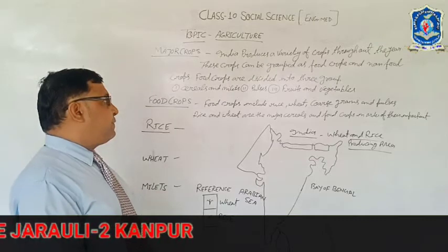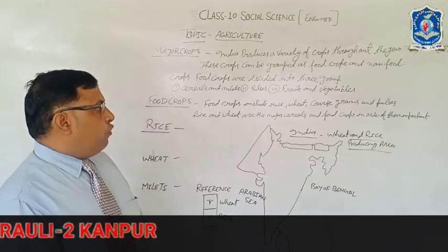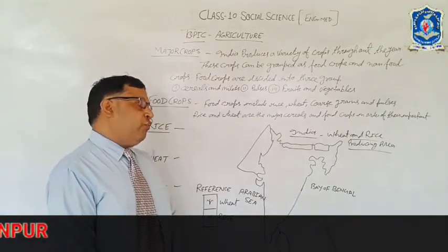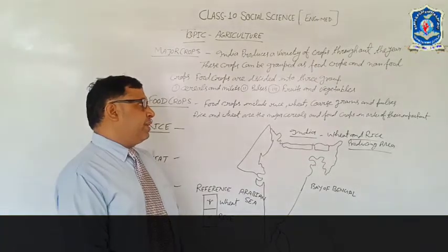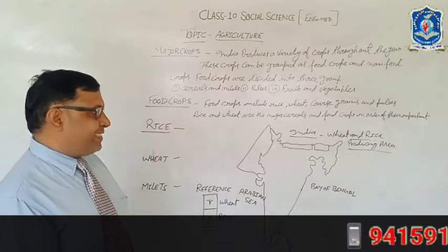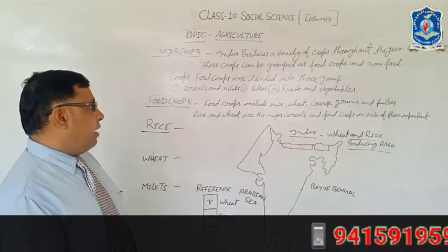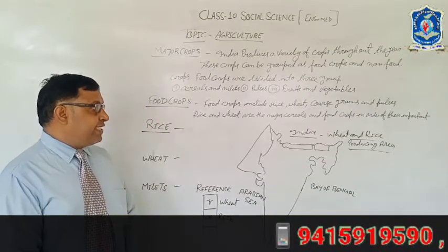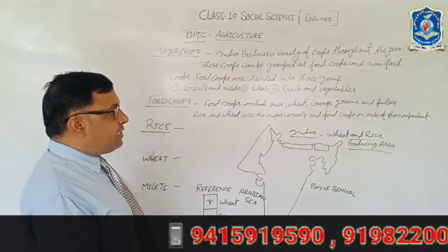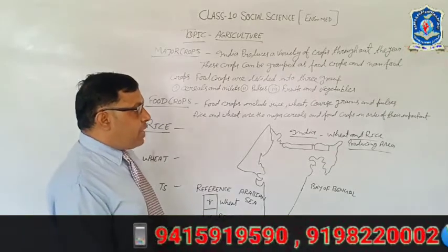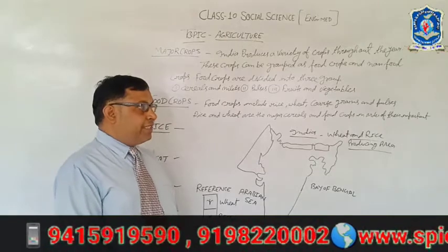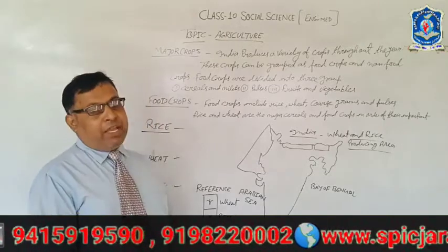Food crops include rice, wheat, coarse grains, and pulses. Rice and wheat are the major staple food crops in order of their importance.